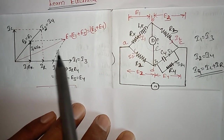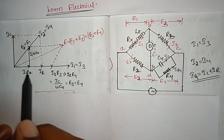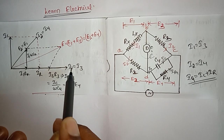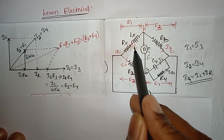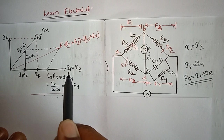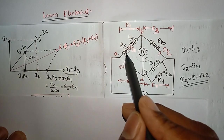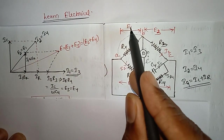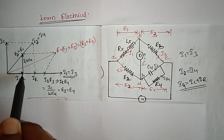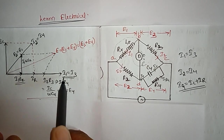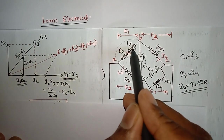Now we draw the phasor diagram of Maxwell's Inductance-Capacitance Bridge. We take I1 as reference. In the balancing condition I1 = I3, so I1 and I3 are represented by the same vector. We add the resistance drop and reactance drop of arm one to get E1. The resistance drop I1·Rx is in phase with I1.